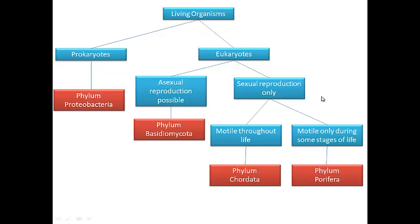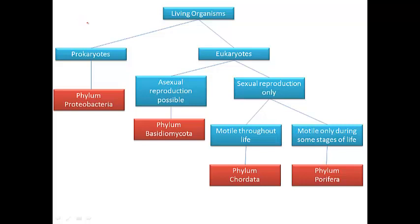To begin making a dichotomous key, I will number each of the pairs of descriptive statements. Each choice within the pair of statements receives a letter. The choice on the left is A, and the choice on the right is B.